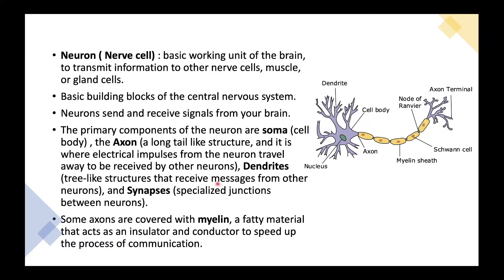Some axons are covered with a myelin sheath — a fatty material that acts as an insulator and a conductor to speed up the process of communication and transmission of information. Myelin basically acts as a supporting agent.